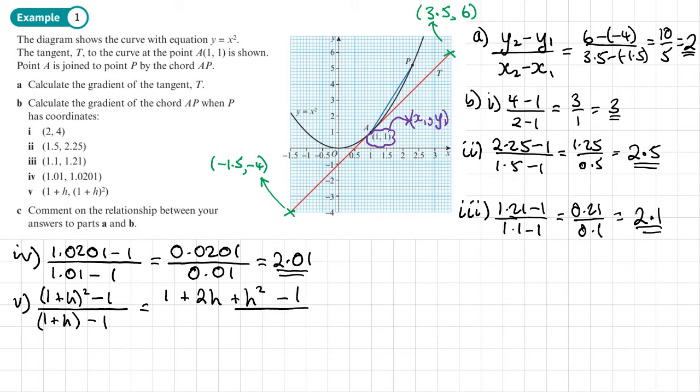So 1 plus h all squared is going to be 1 plus 2h plus h squared, and then that's going to be minus 1. The bottom's just going to be 1 plus h minus 1. What will happen here is that the ones obviously will go because you've got 1 minus 1, so that just leaves 2h plus h squared over h.